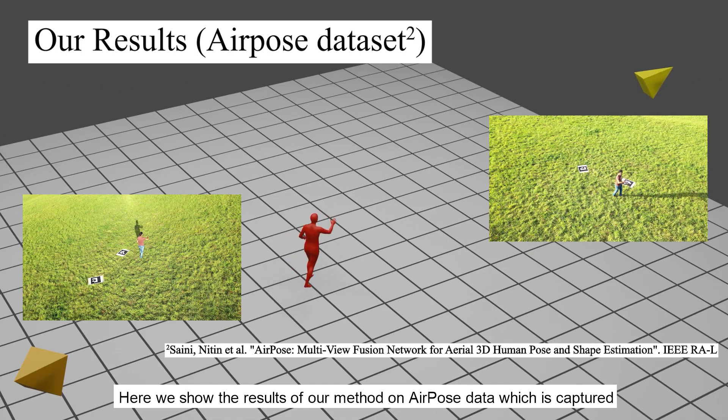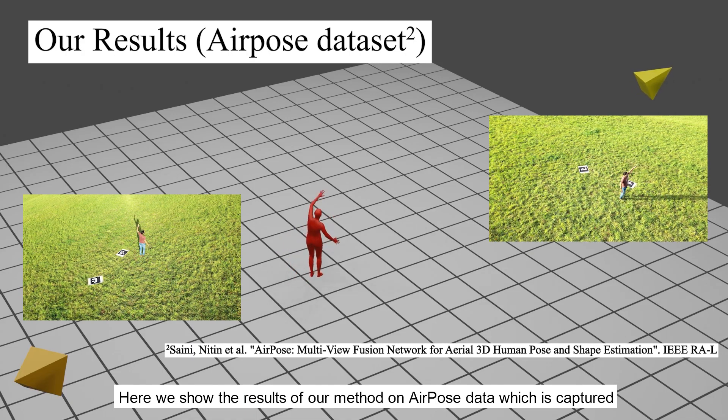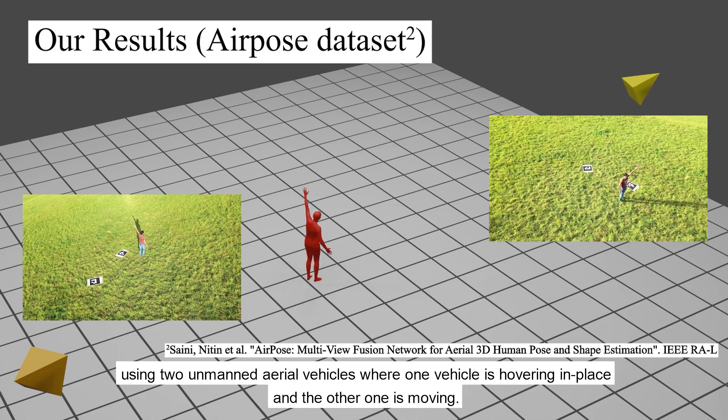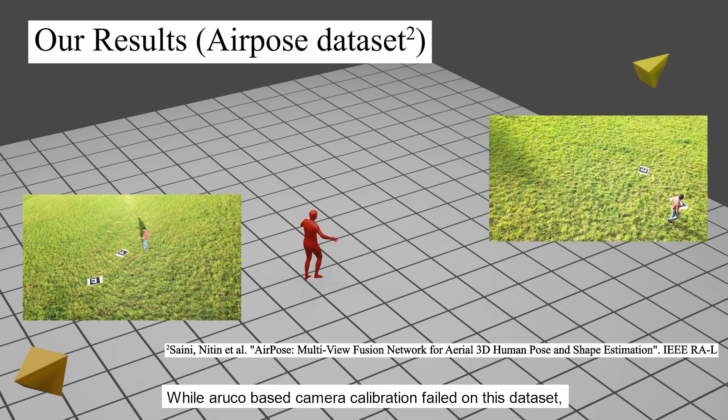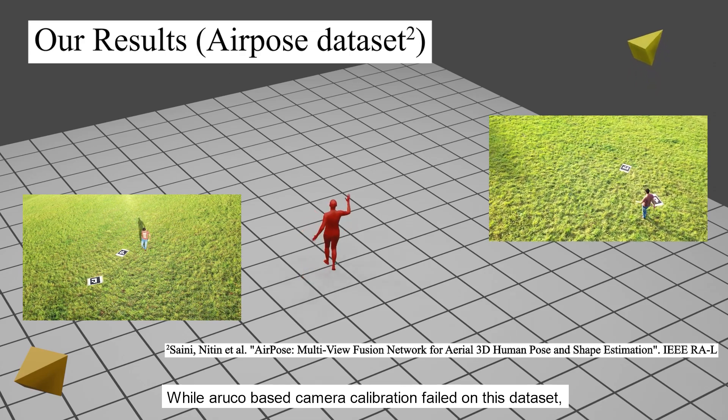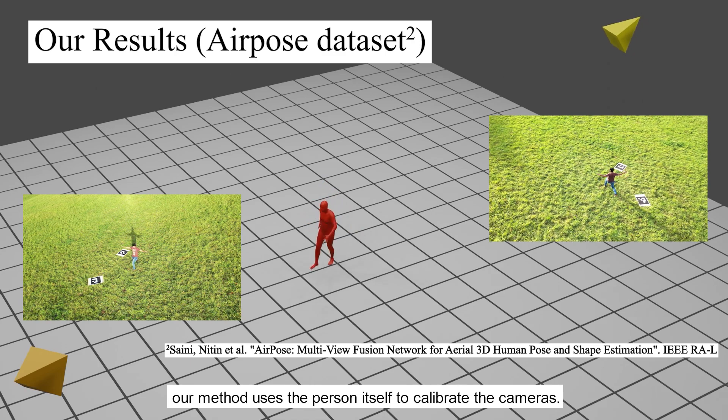Here we show the results of our method on AirPost data, which is captured using two unmanned aerial vehicles, where one vehicle is hovering in place and the other one is moving. While Aruko-based camera calibration failed on this dataset, our method uses the person itself to calibrate the cameras.